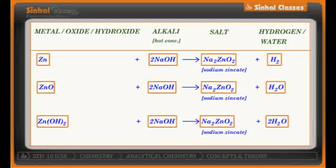Now taking the amphoteric oxide of zinc — ZnO treated with NaOH — will again give you sodium zincate Na2ZnO2 along with water. So what do you notice? If you take the metal, you get hydrogen gas; if you take the hydroxide or oxide, you will always get water along with sodium zincate.